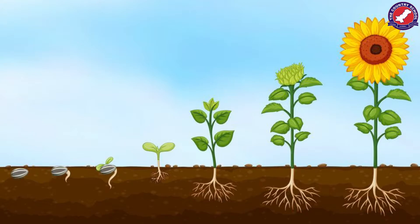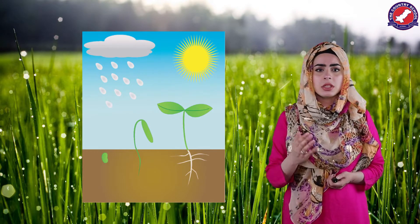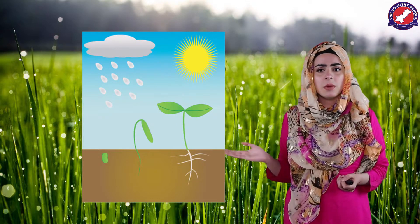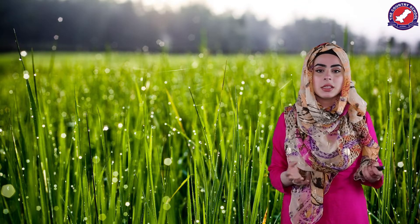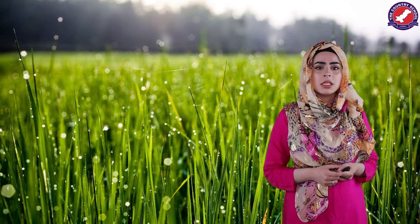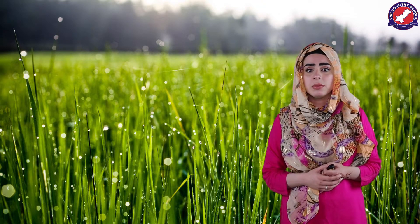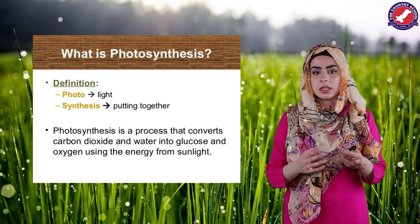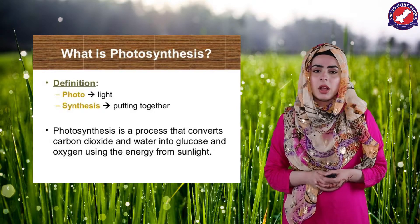Plants need three basic things to live: sunlight, water, and carbon dioxide. Through a process called photosynthesis, plants use the energy from the Sun to convert carbon dioxide, soil nutrients, and water into food. Unlike animals, plants are autotrophs, meaning they create their own food source. They use energy from light, water, and gases from the air to create glucose — this process is photosynthesis, and all plants, algae, and even some microorganisms use it.